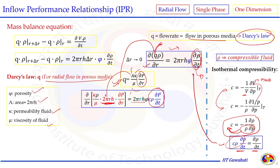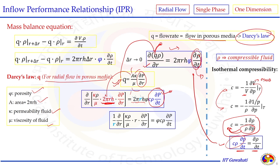Now our equation, when we replace q using Darcy law, gives us k·ρ/μ·2πrh for the area on the left side, and on the right-hand side 2πrh·φ with ∂ρ/∂t replaced by C·ρ·∂p/∂t. We now have the equation in the form of pressure, which we can solve to get the IPR. Since h is constant and φ is constant, 2πh cancels from both sides and the equation is simplified.